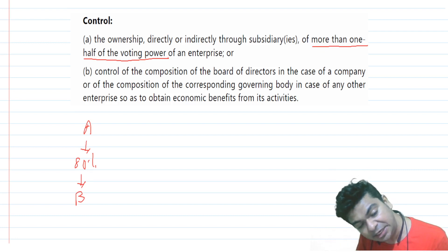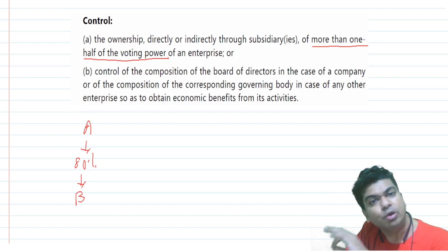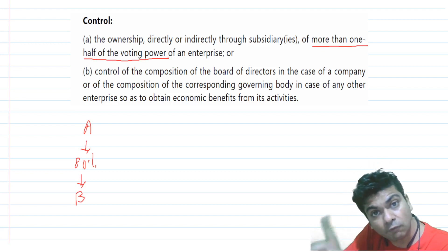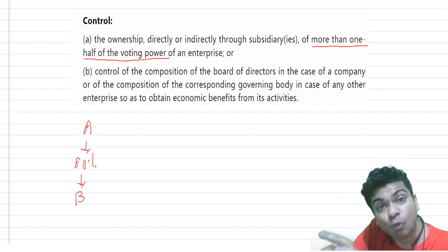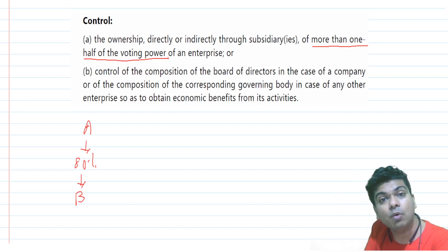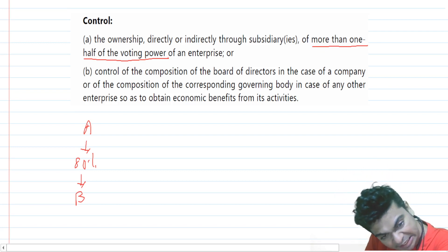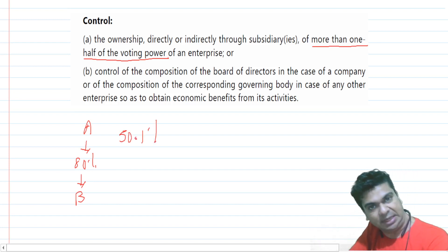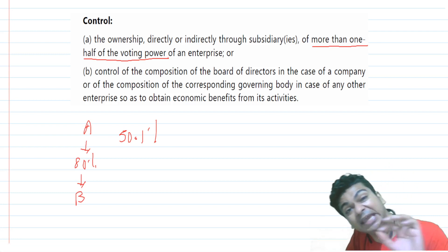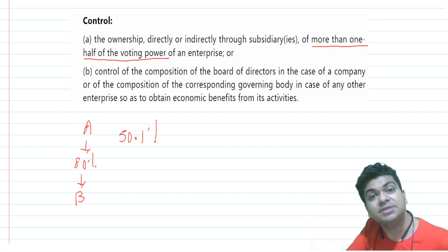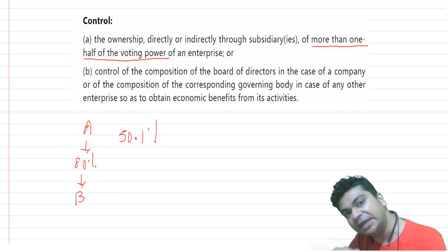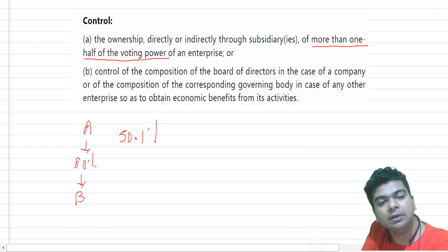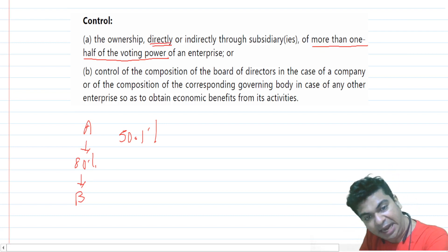It is not necessary to have as much as 80% — more than one half is sufficient. Even if you acquire 50.1%, and the rest hold 49.9%, you can still control that particular entity. The standard uses the words 'more than one half,' so even 50.1% is enough.